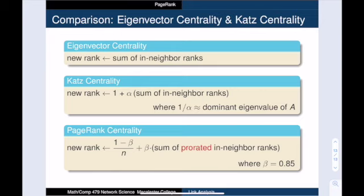Finally, let's compare page rank with the other feedback centralities that we talked about in the videos about algebraic centrality measures. In eigenvector centrality, our new score is the sum of our in-neighbors scores. In Katz centrality, we take a weighted sum of self-importance and the sum of our in-neighbors scores. In page rank centrality, we also take a weighted sum of self-importance and neighbor scores, but this time, those neighbor scores are prorated. Rather than receiving the full importance score from each in-neighbor, the vertex receives its fair share. That is, when a vertex passes along its importance, that importance is divided equally among the out-neighbors.